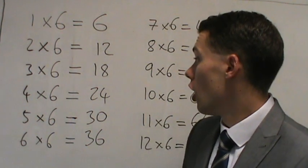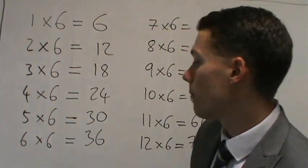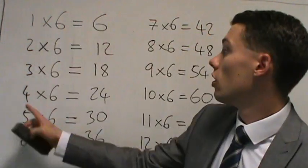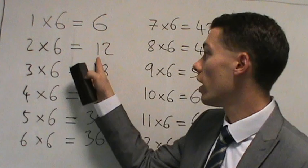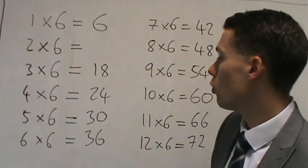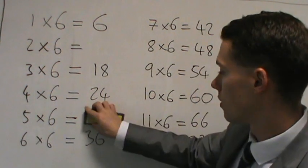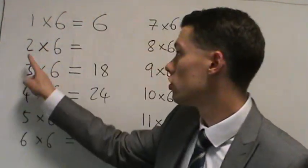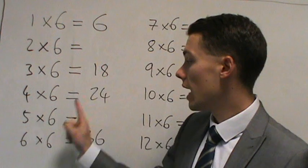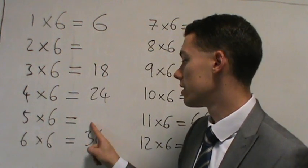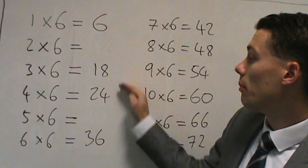I'm going to rub out 2 times 6 which is 12 and I'm also going to rub out 5 times 6 which is 30. So 2 times 6 is 12 and 5 times 6 is 30.